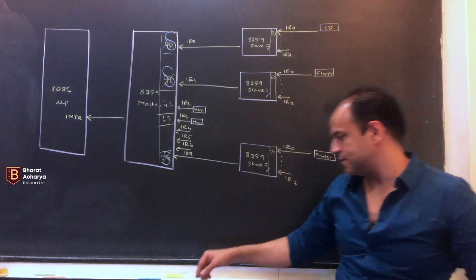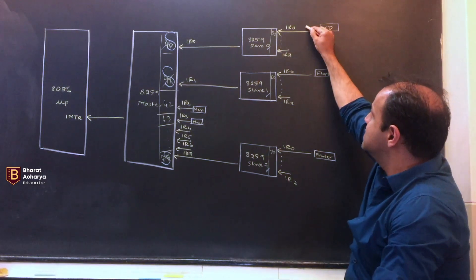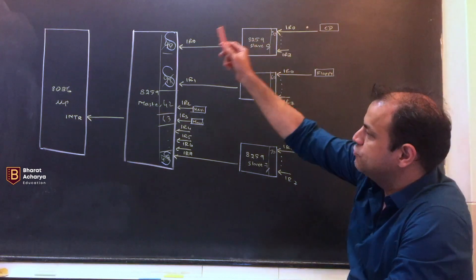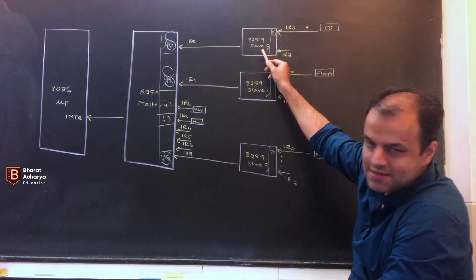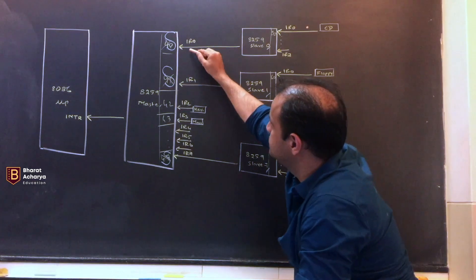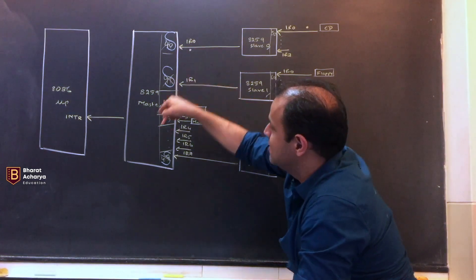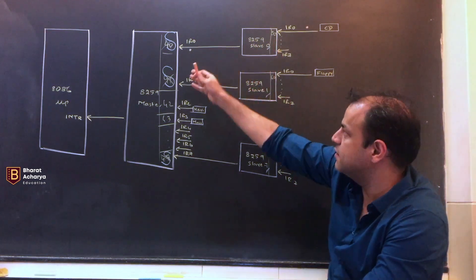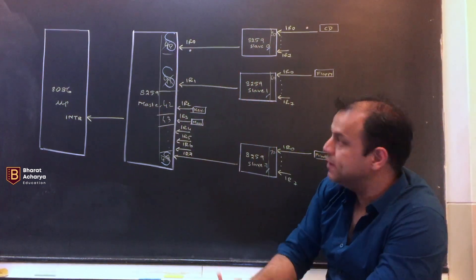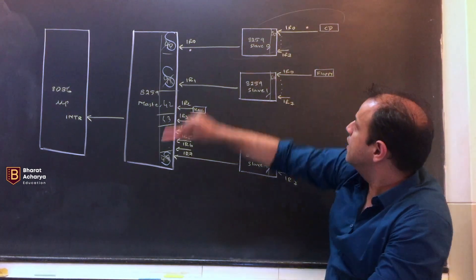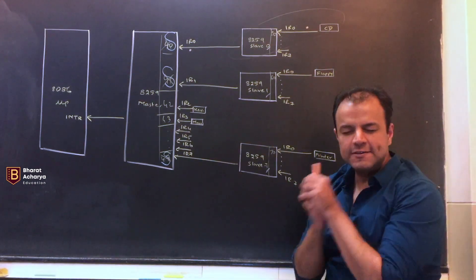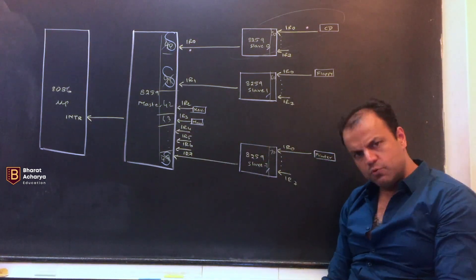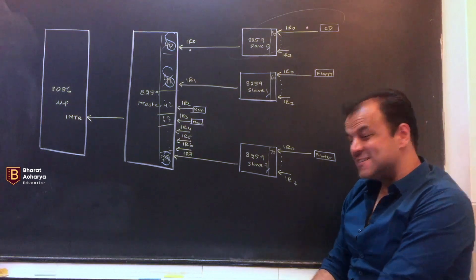Now let's start. Suppose CD has generated an interrupt. CD wants to interrupt the CPU. It will interrupt the slave. Slave will interrupt the master on IR-0. Master will interrupt the CPU. The slave has interrupted the master in the hope that master will interrupt the CPU. For this slave, IR-0 was the highest priority interrupt. It has given its best interrupt to the master in the hope that the master will interrupt the CPU.